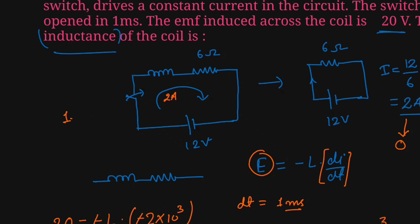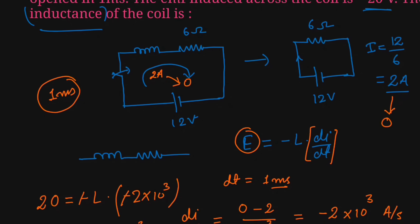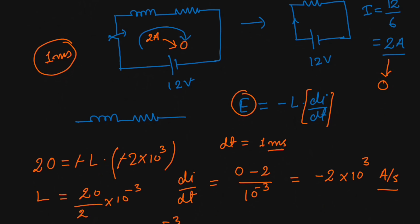When the switch gets opened in 1 millisecond, the 2 ampere current immediately becomes 0 ampere. From this, di/dt = -2 × 10³ ampere per second. Using e = -L(di/dt) with induced EMF of 20 volts, we can find L = 10 millihenry. This is how we can solve such type of problems.